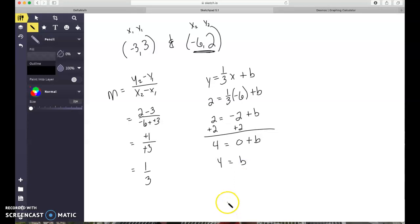Okay, so I have 0 plus b, which is b. And my final answer is going to be y equals 1 third x plus 4.